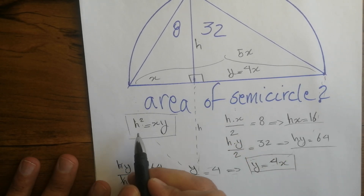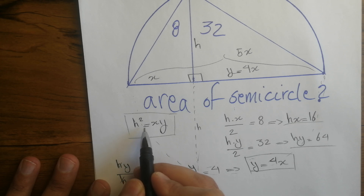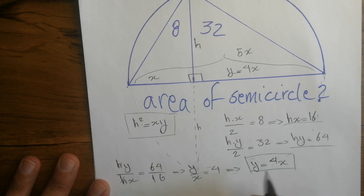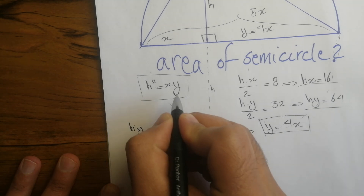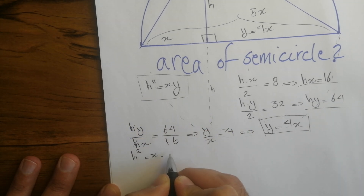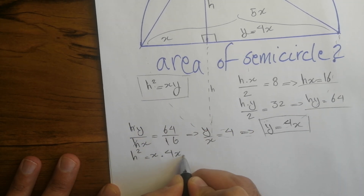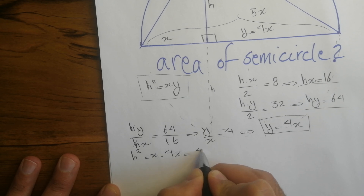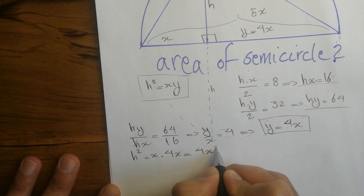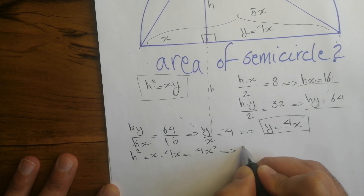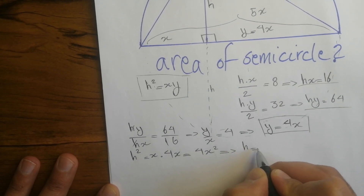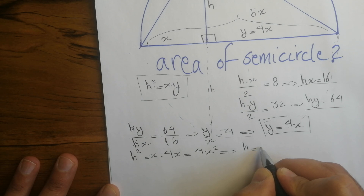Let's come back to the formula h squared equals xy. Substituting y by 4x: h squared equals x times 4x, which equals 4x squared. Taking the square root of both sides, h equals 2x.